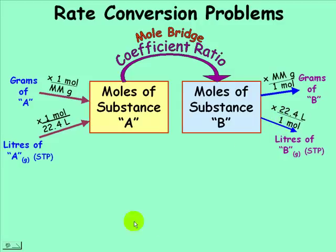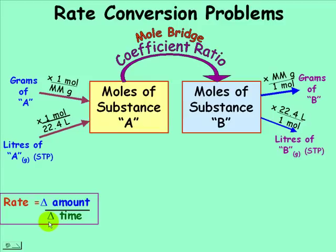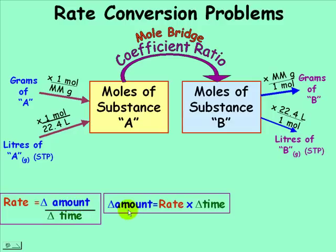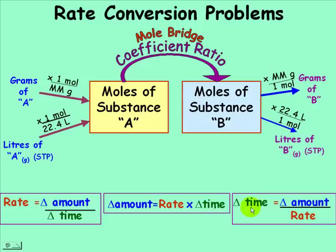In Chemistry 12, we're dealing with rates. Remember the three rate equations: rate is the change in amount over change in time. If we know the rate and the time, we can find the amount by multiplying rate by time. If we're asked how long it will take to produce a certain amount, the time equals the change in amount divided by the rate. With these three equations and the conversions above, we can work through rate conversion problems.